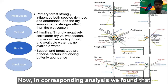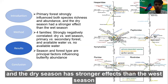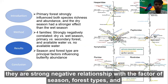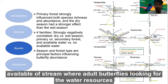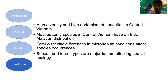In the correspondence analysis, we found that primary forests influence both species richness and abundance, and the dry season has stronger effects than the wet season. Looking at family-level sampling, there is a strong relationship with the factors of season, forest type, and proximity to streams — suggesting these butterflies are seeking water resources. Season and forest type emerged as the two principal factors.